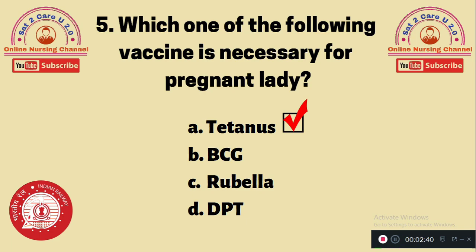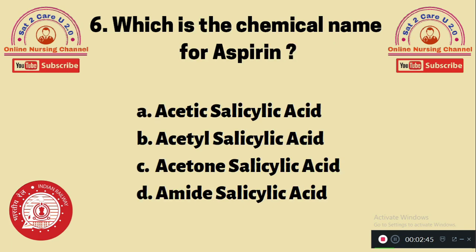Tetanus vaccine is given to prevent any complications at the time of the child's birth. Question 6: Which is the chemical name for aspirin? A. Acetic salicylic acid, B. Acetyl salicylic acid, C. Acetone salicylic acid, D. Amide salicylic acid. The chemical name for aspirin is option B — acetyl salicylic acid.